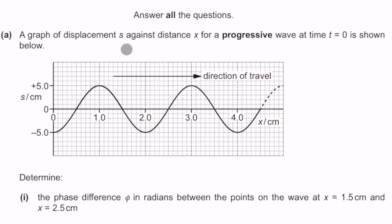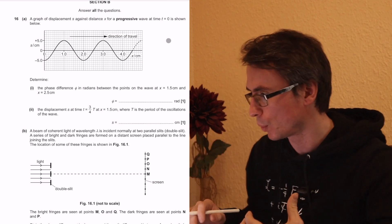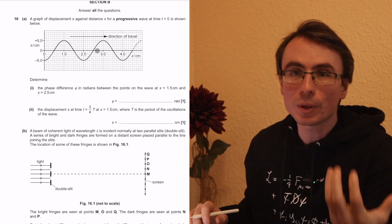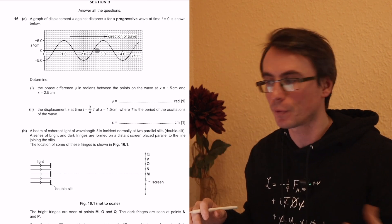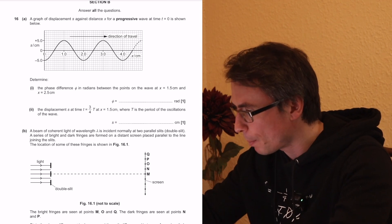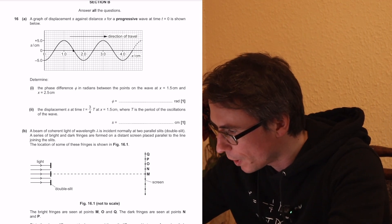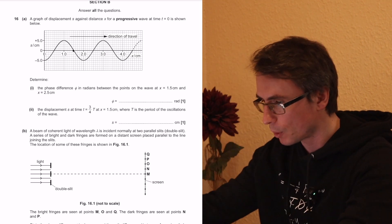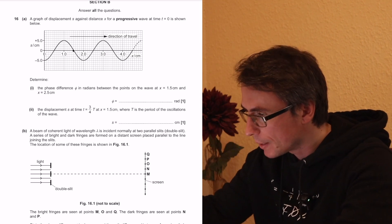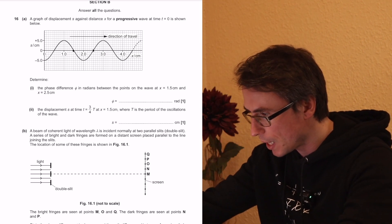We have a graph of displacement S against distance X for a progressive wave, and this is at time T equal to zero. We're also given the direction of travel. The phase difference in radians between the points on the wave at X equal to 1.5 — that's this point over here — and X equal to 2.5 is...